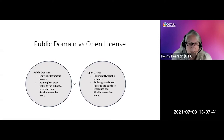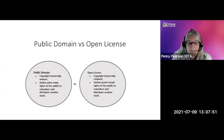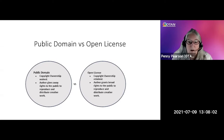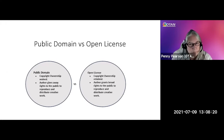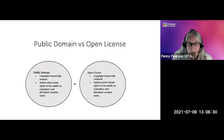On the other side, with an open license, the copyrights are still held or owned by the person who created it — copyright ownership is retained. What happens is the author or creator is granting broad rights to the public on how they can use that work, how they can reproduce it, or how they can distribute that creative work. Public domain is the release of all copyrights, whereas an open license says: I still own the copyrights, but I am going to release those rights with certain restrictions — or not. You have that choice.